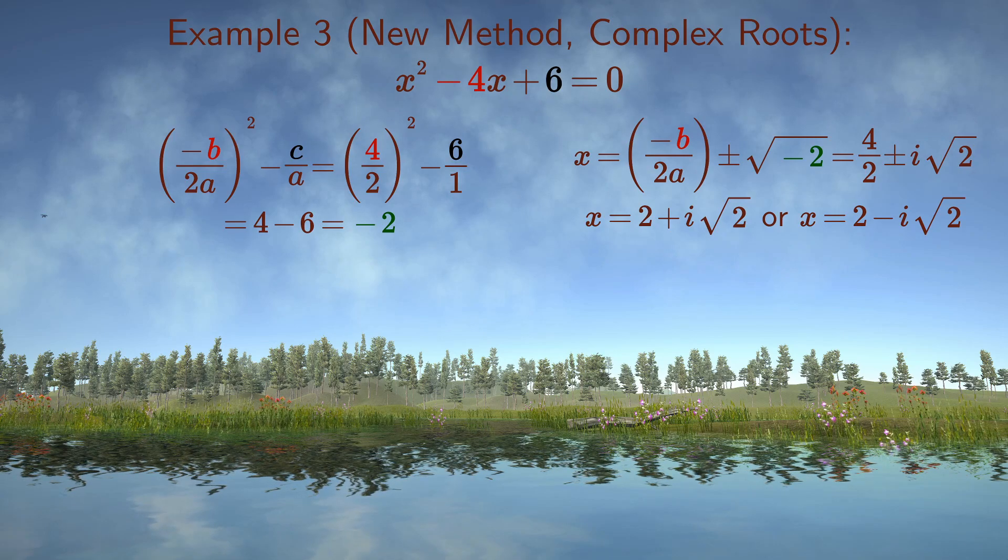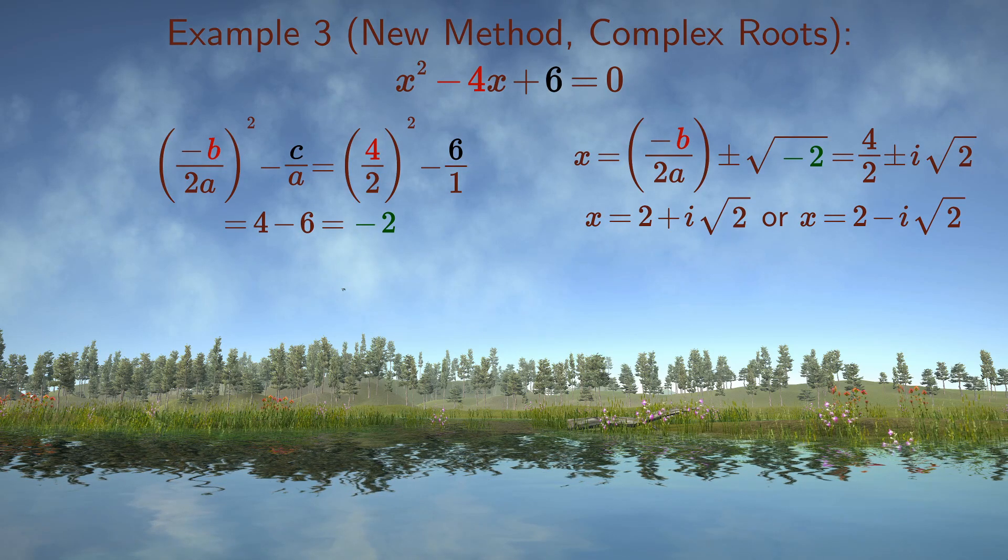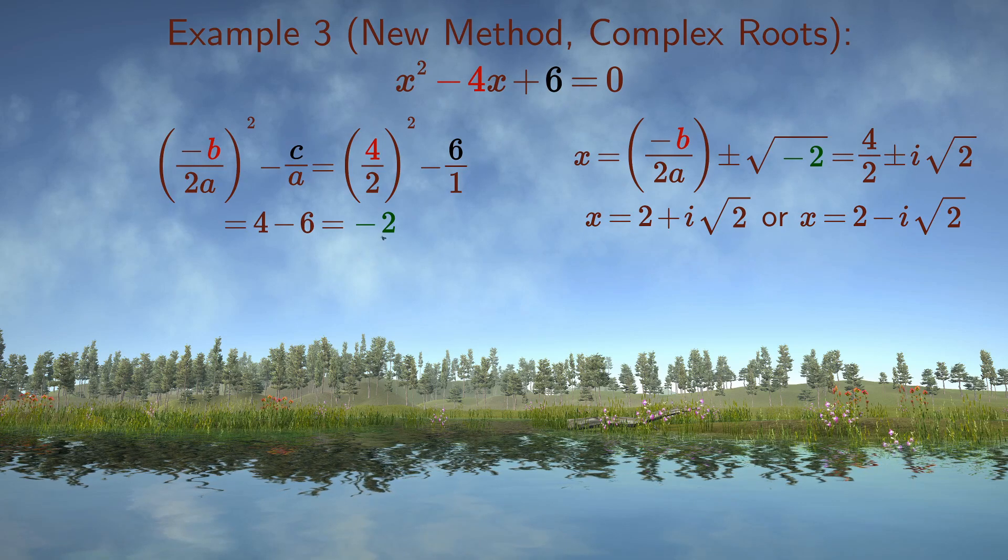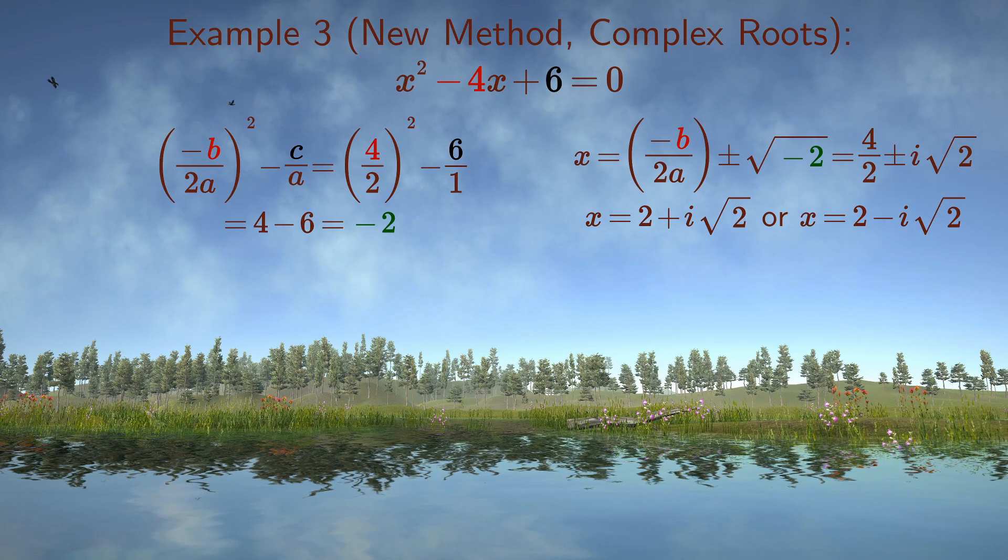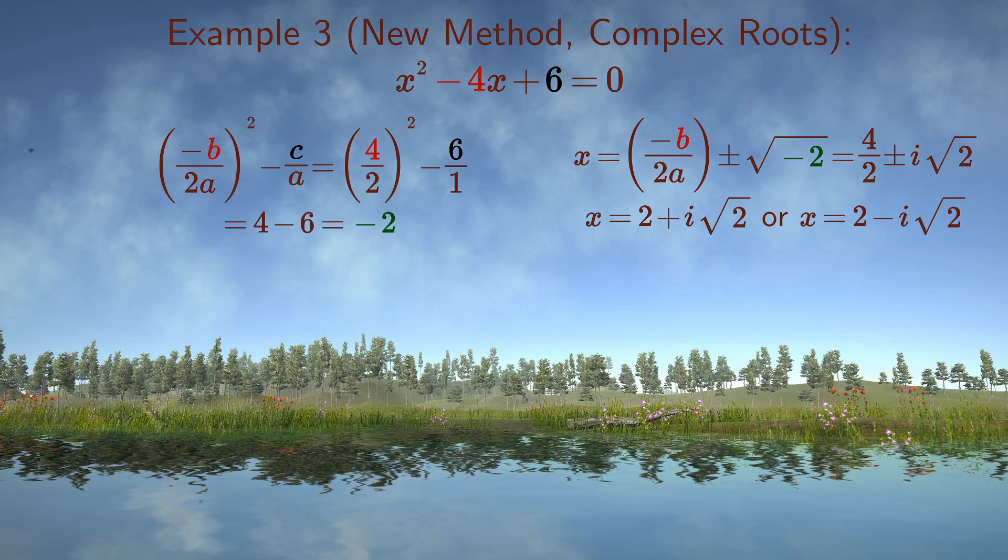You now take the square root of minus 2, which is plus or minus i times square root of 2. The answer is therefore 2 plus i square root of 2 and 2 minus i square root of 2.